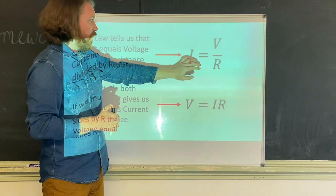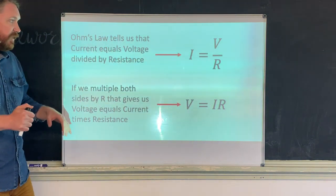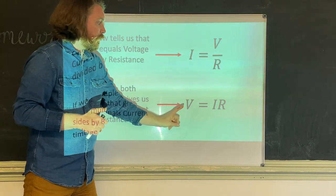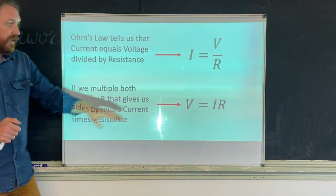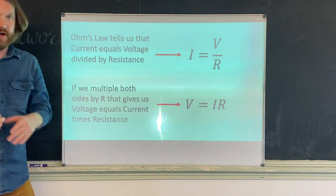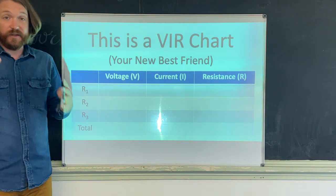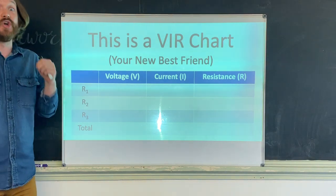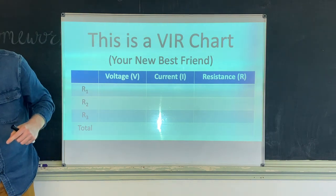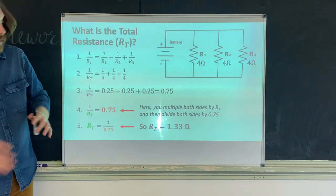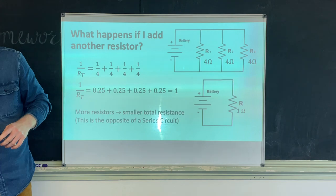From last class, Ohm's Law gives us: current equals voltage divided by resistance. Multiplying both sides by R gives us V = I × R. This is where we get our VIR charts, which are super important with parallel circuits. Most of the time, all that complicated reciprocal math can be avoided just by using a VIR chart.